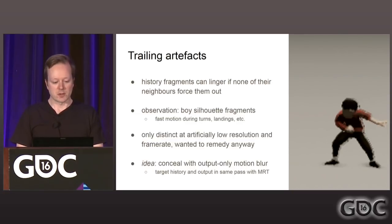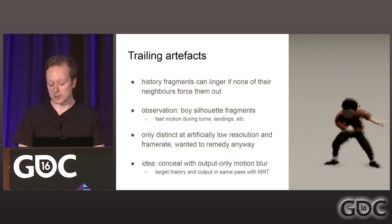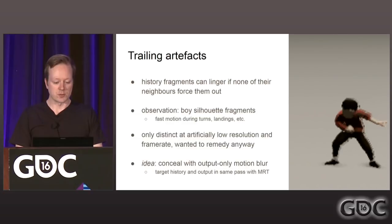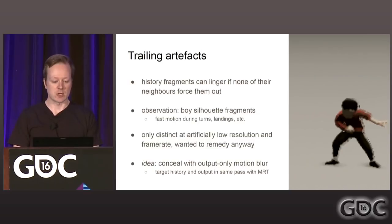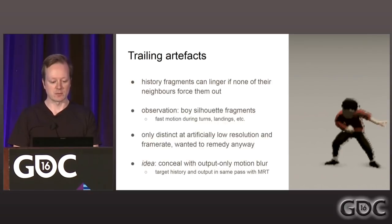A case in point is the silhouette of the boy. I was looking at him at really low frame rates and low resolution, and I noticed fringing artifacts on his edge when he was doing fast motion such as turns and landings. This is a property of neighborhood clamping/clipping — history fragments can linger if none of the neighbors force them out, which is the case for one frame when this happens near an edge. It's only really distinct at artificially low resolution and frame rate, but I was really annoyed by it and wanted to do something.